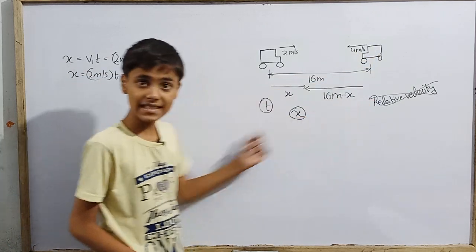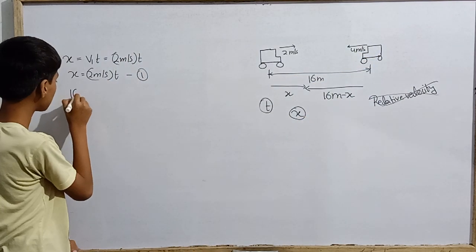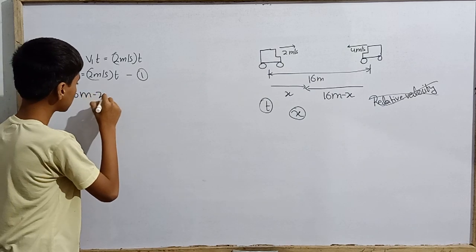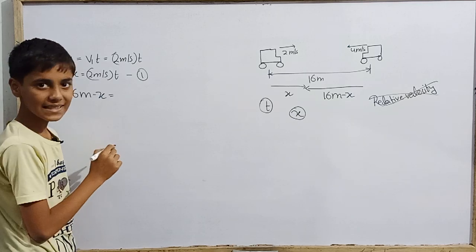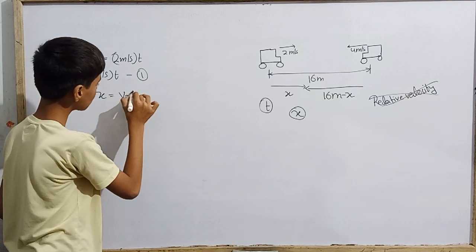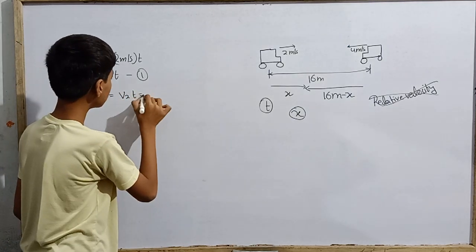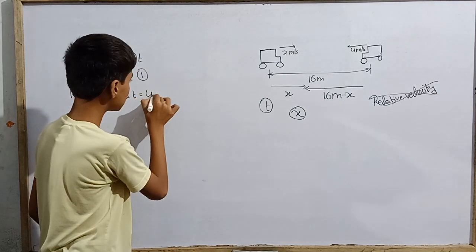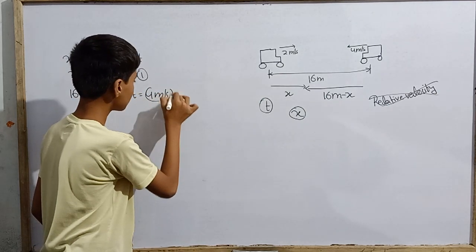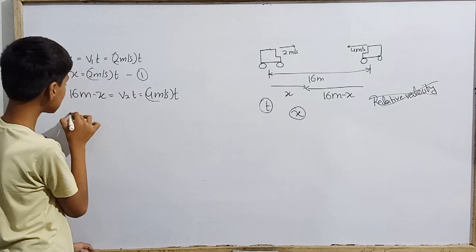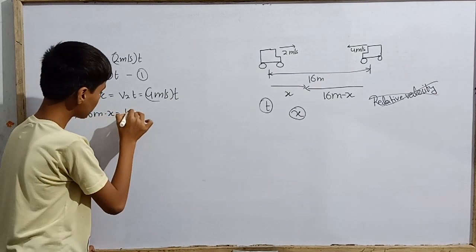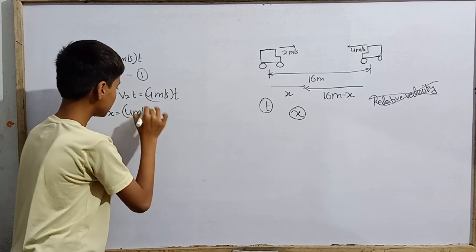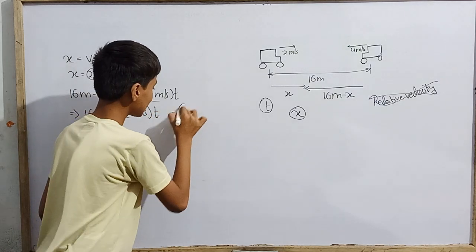After that, we write the equation for the second car. It has 16 meters minus x traveled in the same time, in the same duration. So 16 meter minus x will be the second car's speed times T value, that is 4 meters per second into T. So 16 meter minus x equals 4 meter per second into T. We have the second equation.